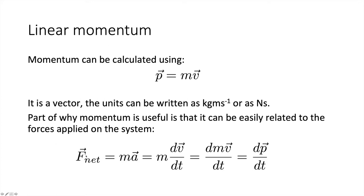We know Newton's second law: the net force equals mass times acceleration, which equals mass times the derivative of velocity with respect to time. As long as the mass isn't changing, we can bring the mass inside the derivative, and we end up with the net force equal to dp/dt — the derivative of the momentum with respect to time.